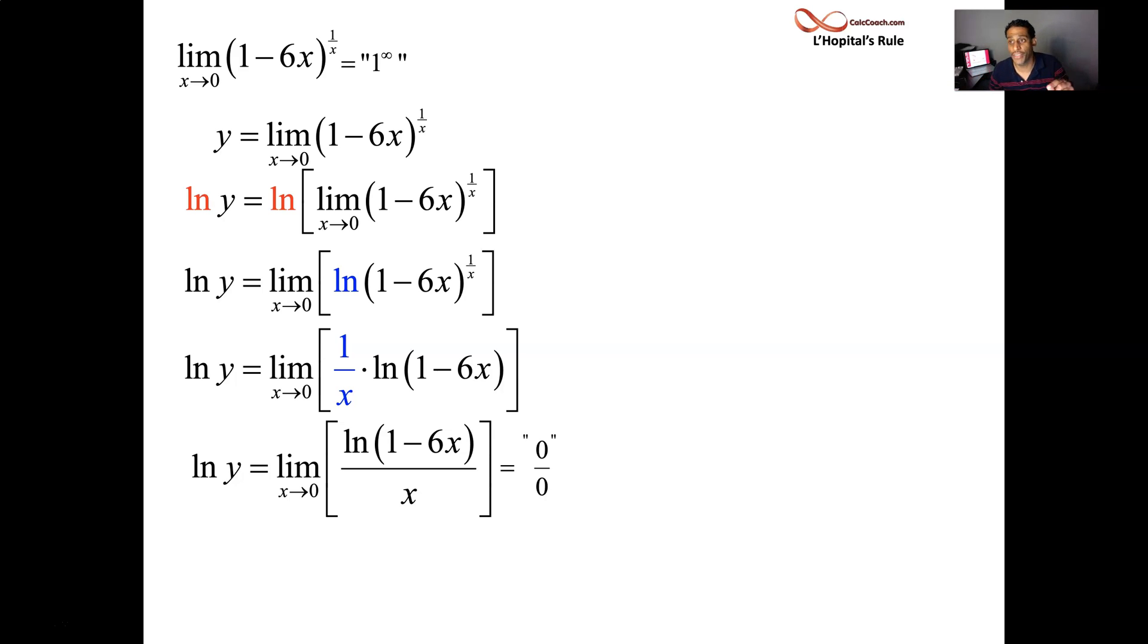What is the derivative of the numerator? One over the inside times the derivative of the inside, negative six. Derivative of the denominator, it's a one. Your new limit is, simplify. Don't do another L'Hopital. Simplify. It's negative six on top of one minus six X. X goes to zero. So, this limit, you don't need L'Hopital again. This limit is negative six.